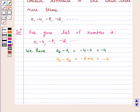a₄ - a₃ is equal to -12 + 8, which is equal to -4.